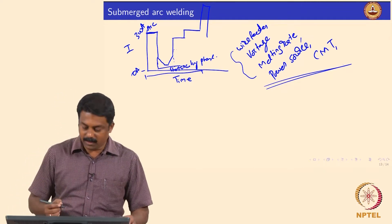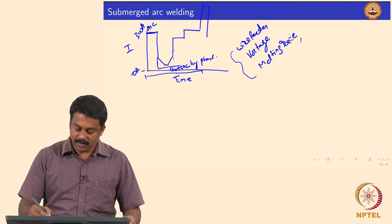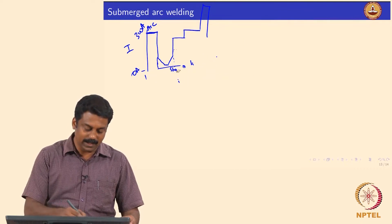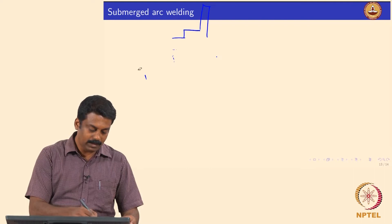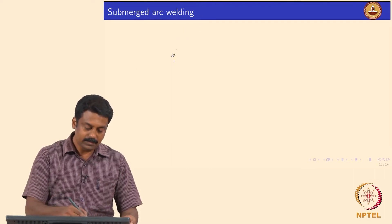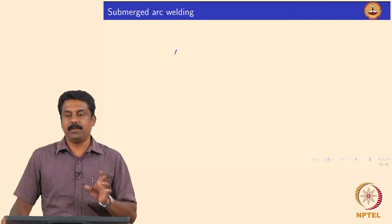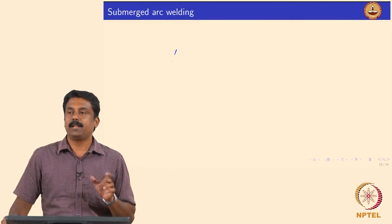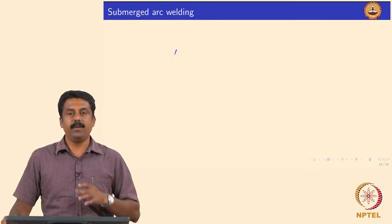Now we will move on to the last welding process in consumable welding: submerged arc welding. The process itself is the same as GMAW - nothing fundamentally different. The schematic and everything is similar; we use a consumable electrode without any flux coating - it is a wire electrode. However, the wire thickness is much larger than in conventional GMAW. Conventional GMAW uses 1.2 mm, not more than 2.2 mm, whereas in submerged arc welding we can use much larger diameters.